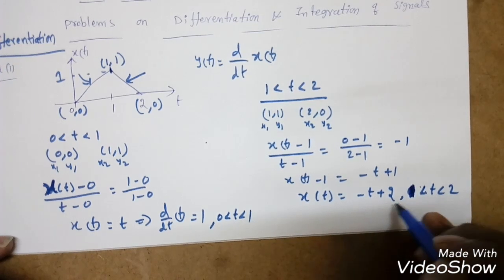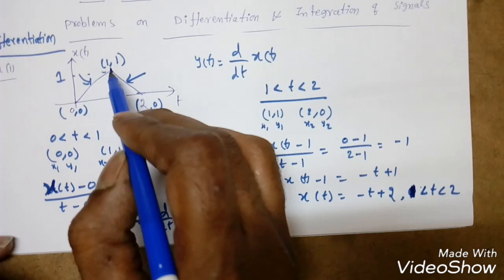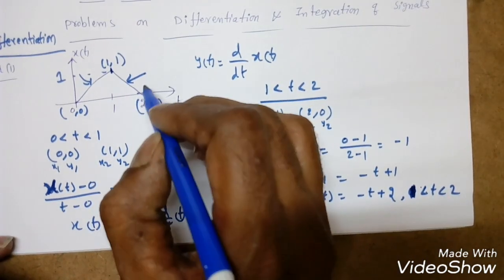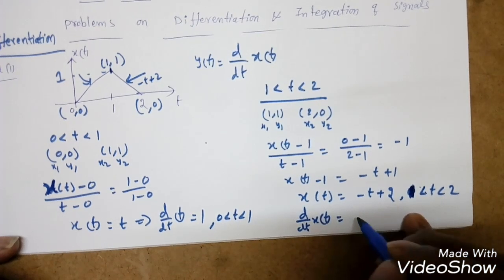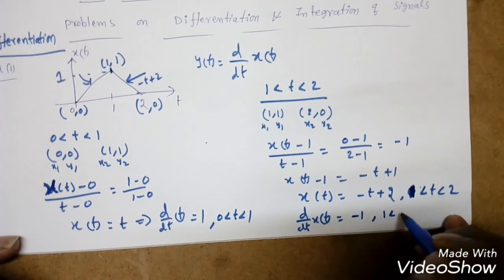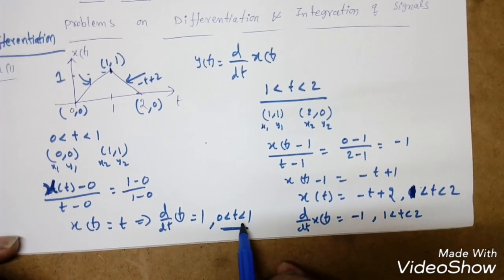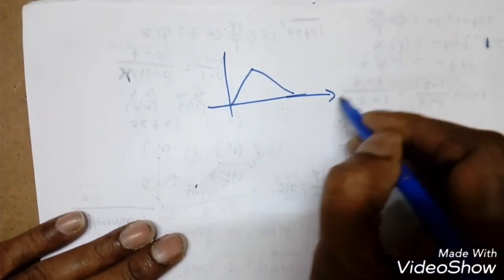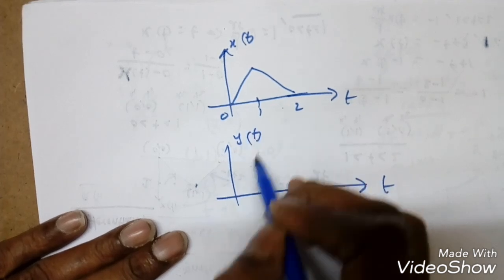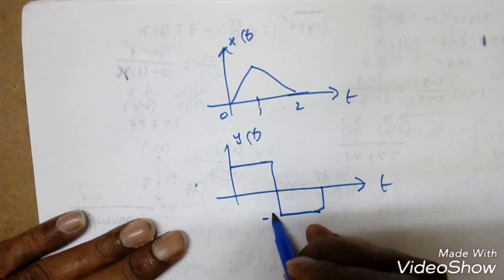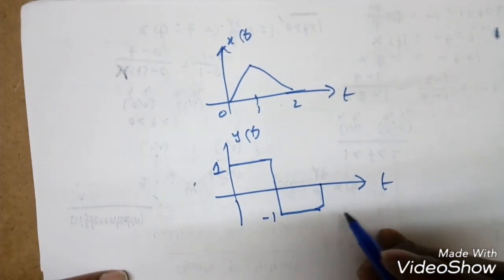We verify: substituting t=1 gives -1+2=1 ✓, and t=2 gives 0 ✓. Differentiating -t+2 gives -1. So for the waveform y(t): from 0 to 1 we get 1, and from 1 to 2 we get -1. This is a rectangular pulse — differentiating a triangular signal gives a rectangular pulse.